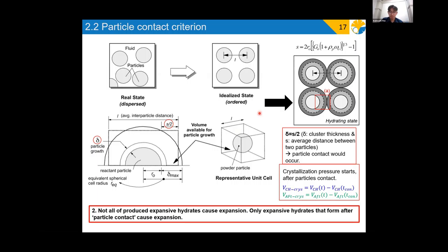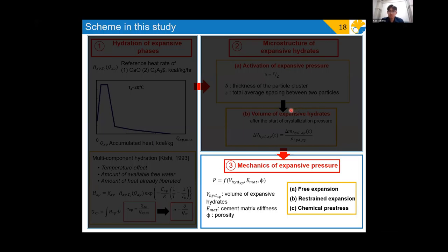However, as mentioned earlier, not all of the expansive hydrates could cause expansion. Crystallization pressure are known to establish from hydration of parent reactants in confined regions. Thus, similarly in the model, only the hydrates which are formed after the particle contact would contribute to expansion. This particle contact occurs when the cluster thickness, delta, has reached half of the average distance between the two particles, which is S. The distance S is a function of Blaine's fineness, powder density, water to binder ratio, and the mean particle size. The expansive hydrates which are formed after the particle contacts are termed as the effective expansive hydrates.